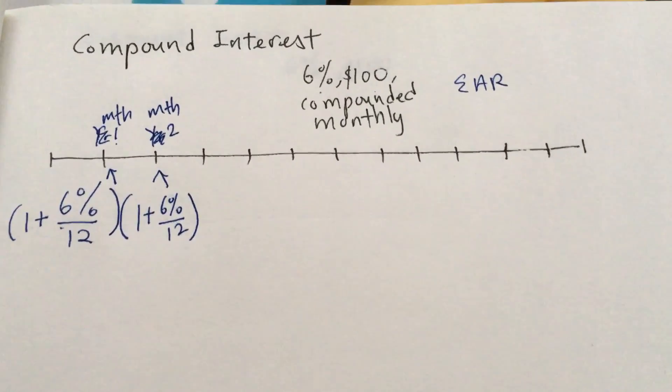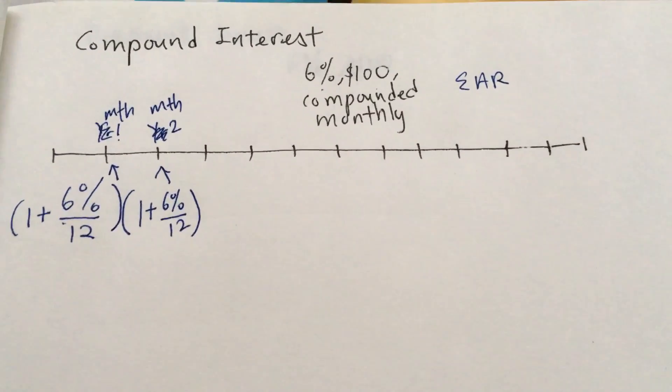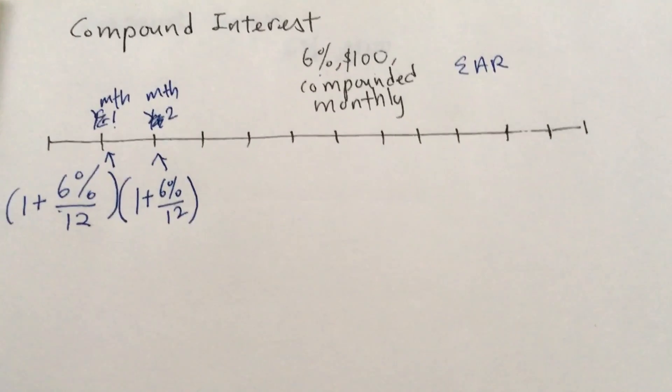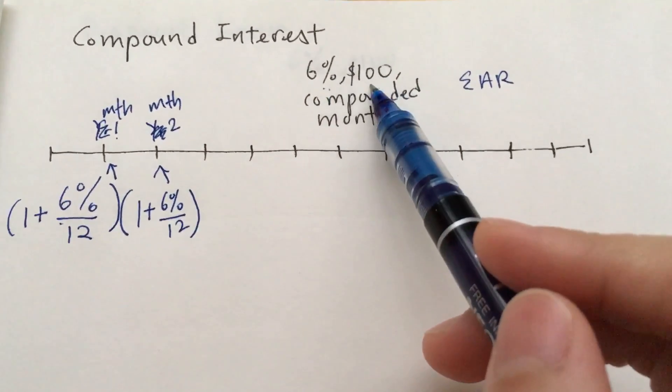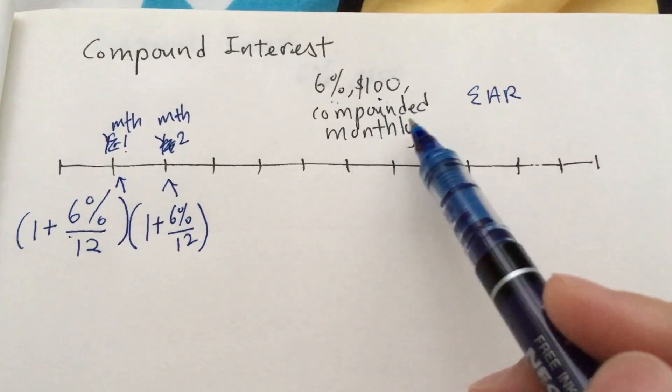Okay, we had a look at the simple interest bank loan. Now let's have a look at the compound interest bank loan using the same example of 6% and $100, but this time compounded monthly.